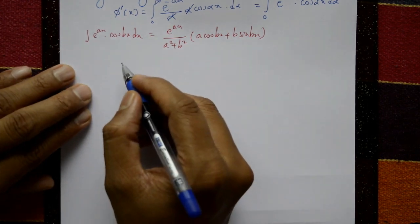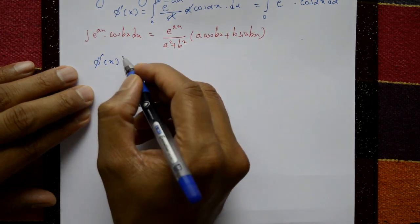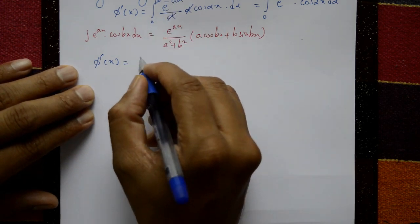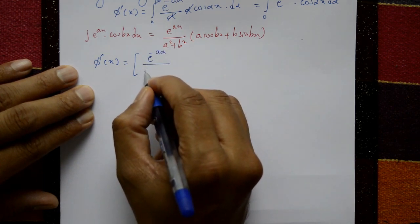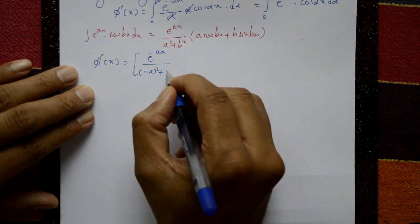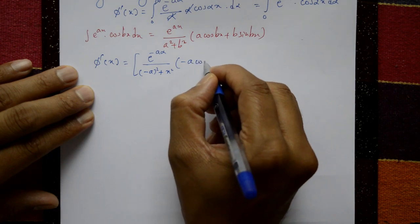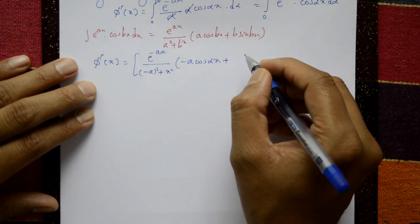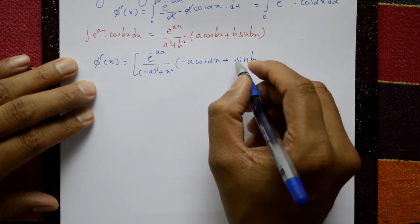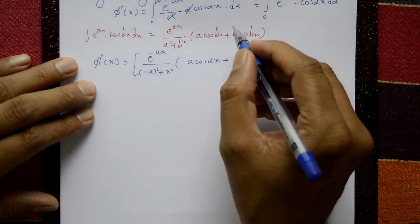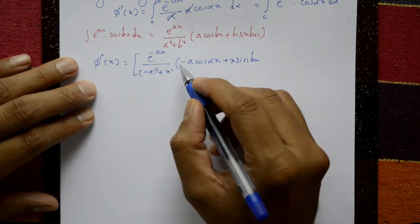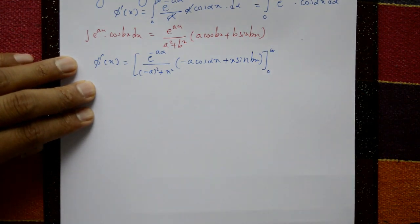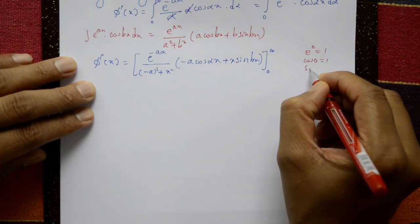Applying the standard formula with a = −a and b = x: φ'(x) = [e^(−aα)/(a² + x²) · (−a cos(αx) + x sin(αx))] evaluated from 0 to ∞. At the upper limit, e^(−a·∞) = 0. At the lower limit (α = 0): e^0 = 1, cos(0) = 1, sin(0) = 0.